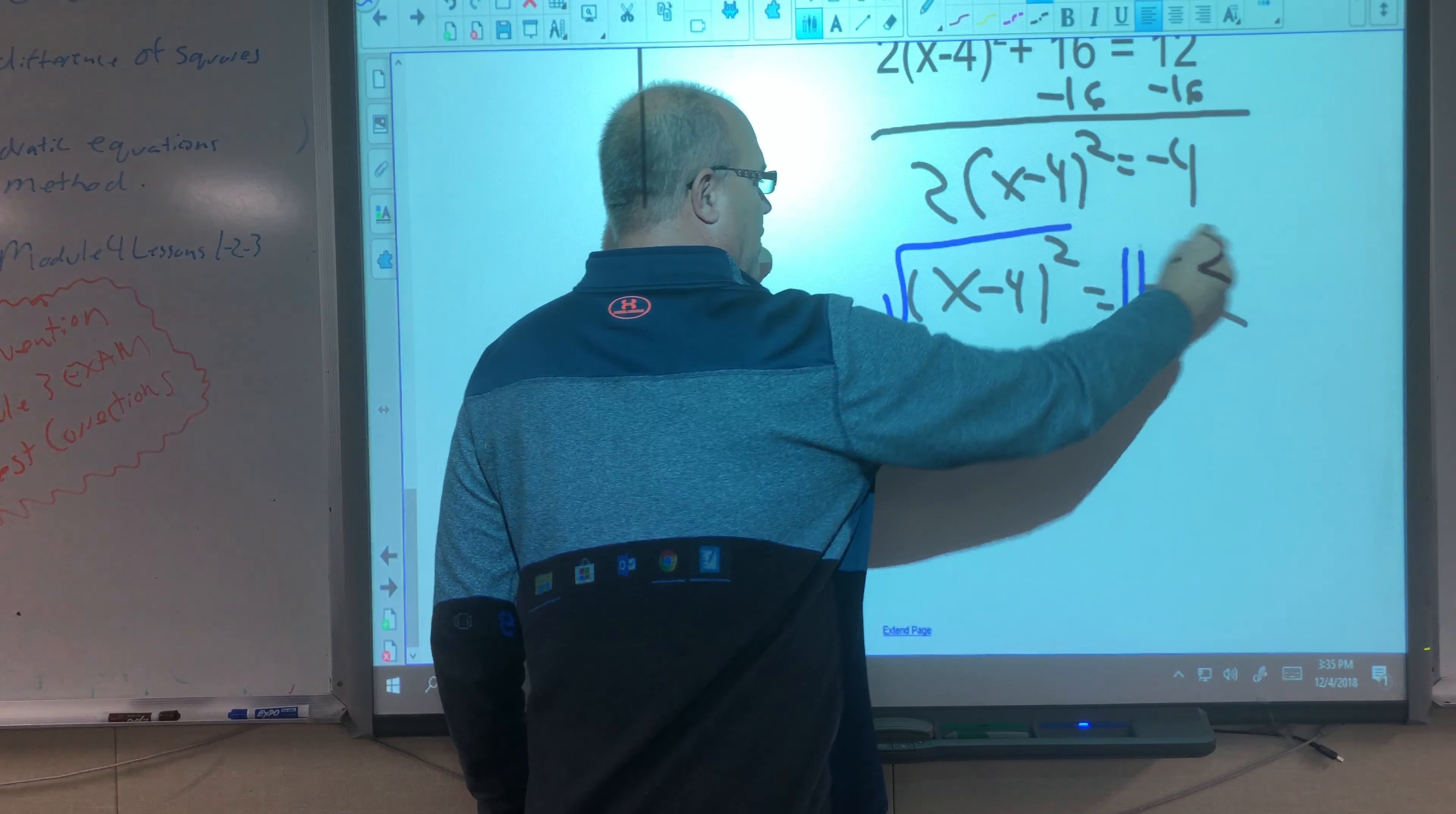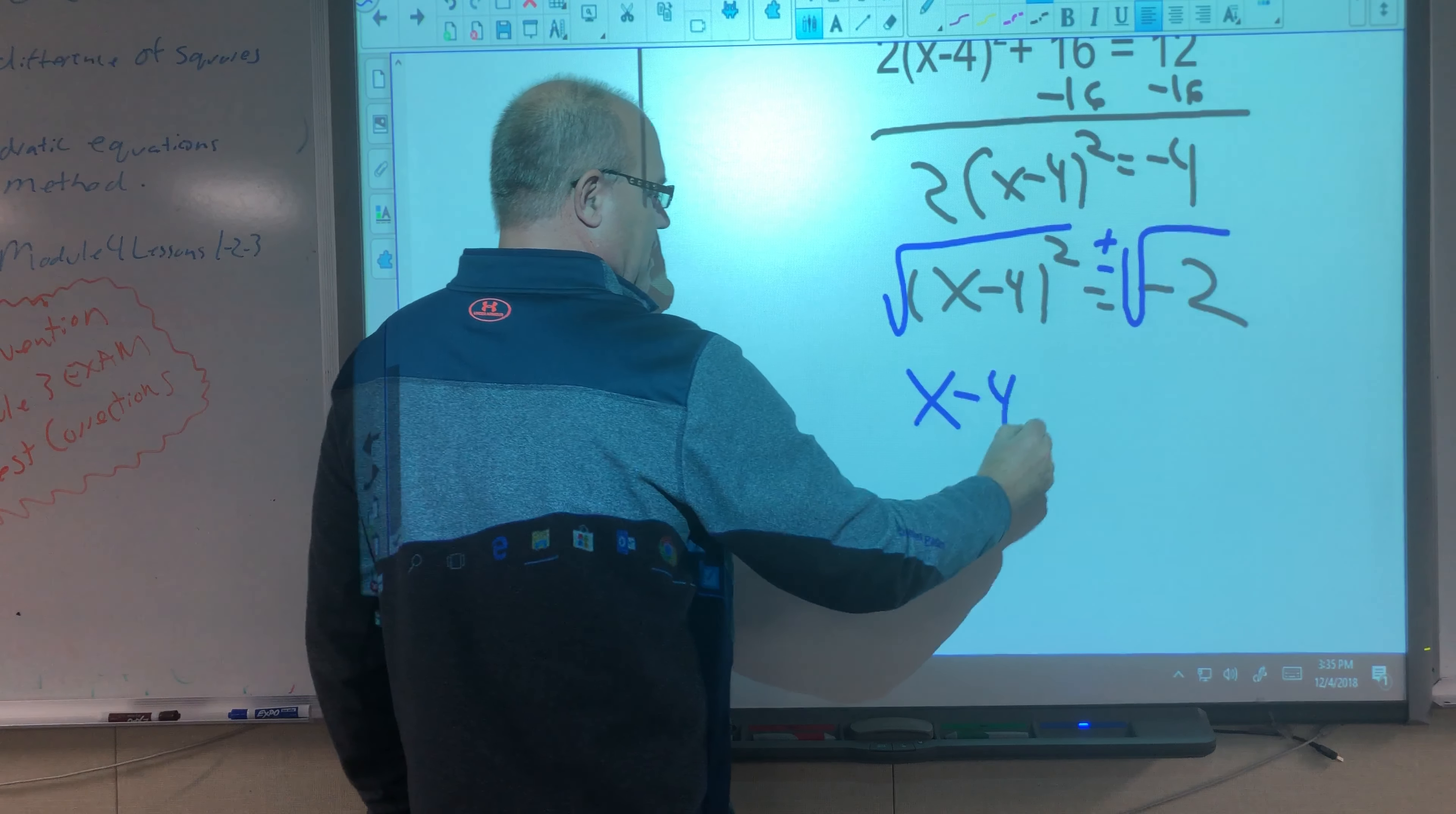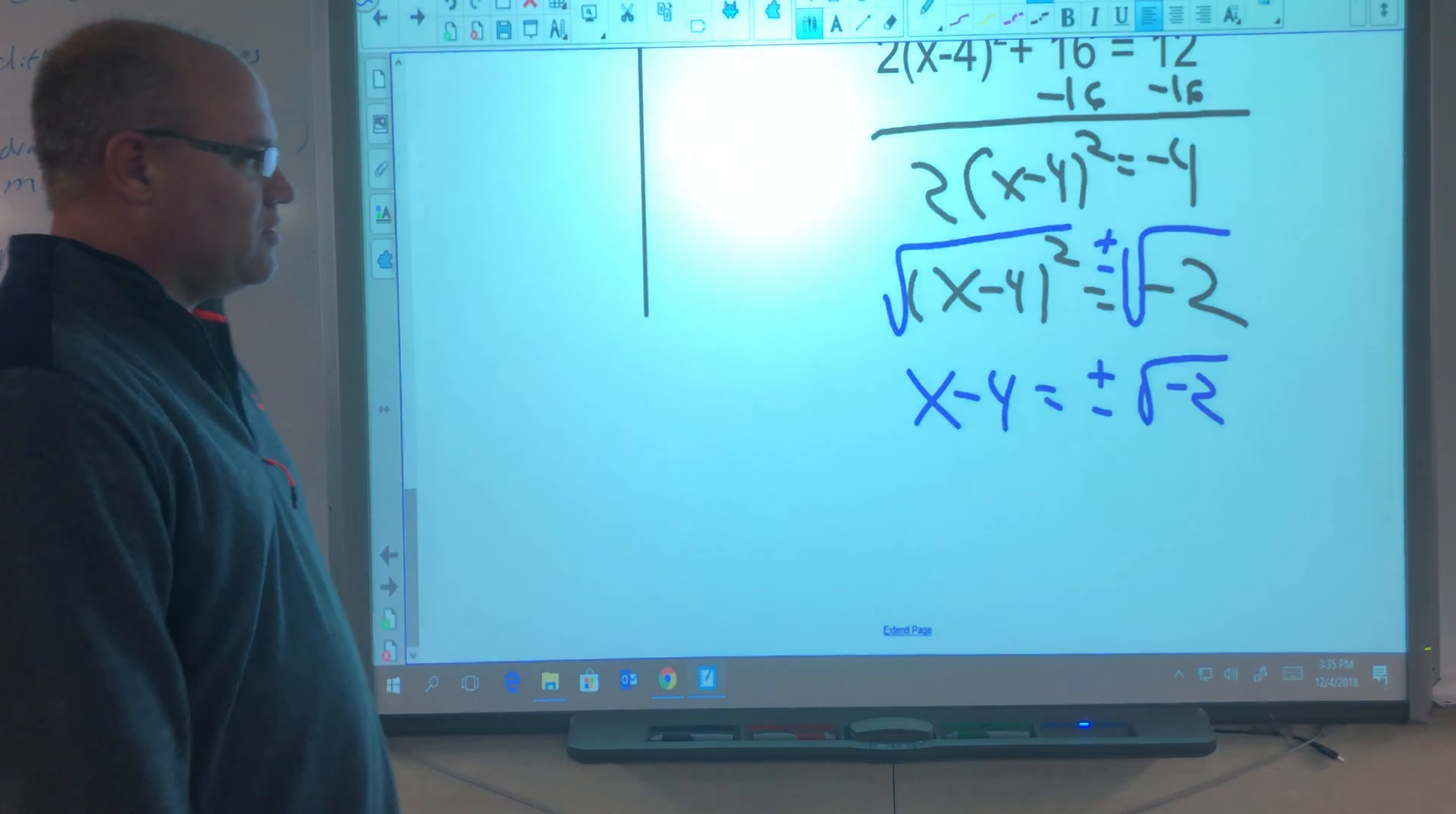Square root, square root, plus minus. What happens here? x minus 4 equals plus or minus the square root of negative 2, which we know is not going to be a real solution.